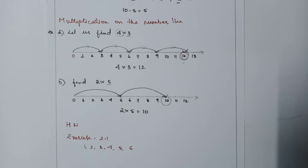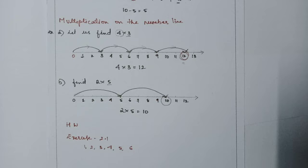Till now we have learned to add, subtract, and multiply whole numbers on the number line. Solve questions 1 to 6 from exercise 2.1. In the next class, along with the key answers for questions 1 to 6 in exercise 2.1, we will continue with the properties of whole numbers. Thank you.